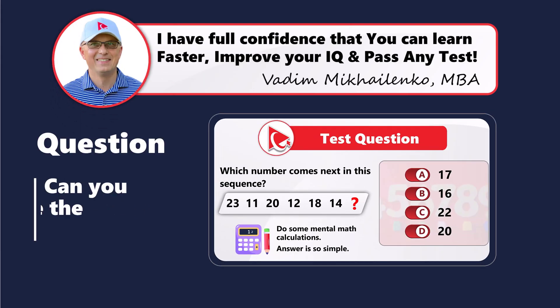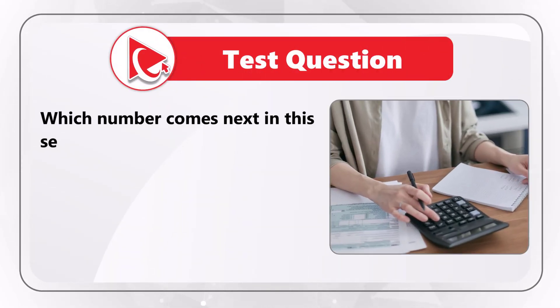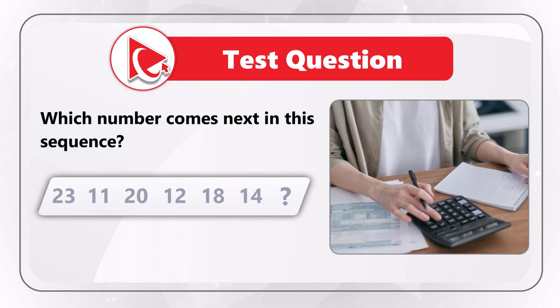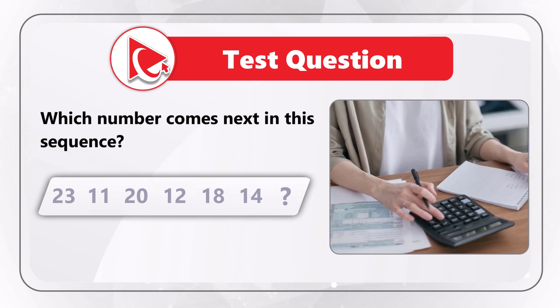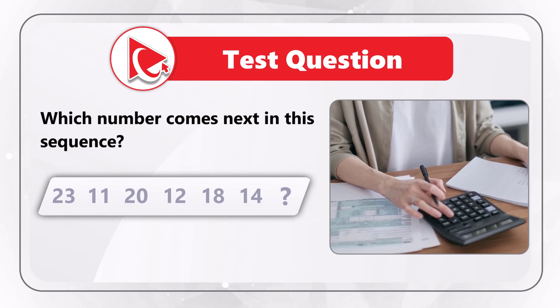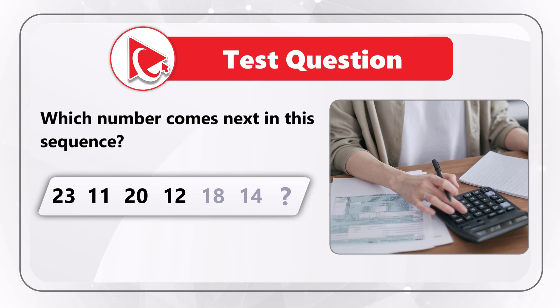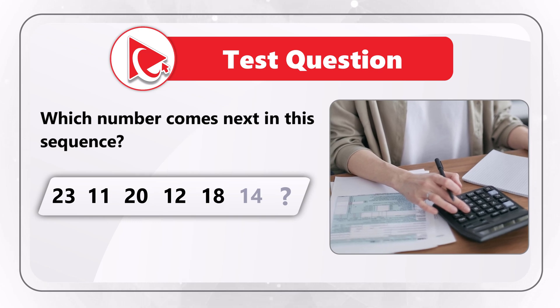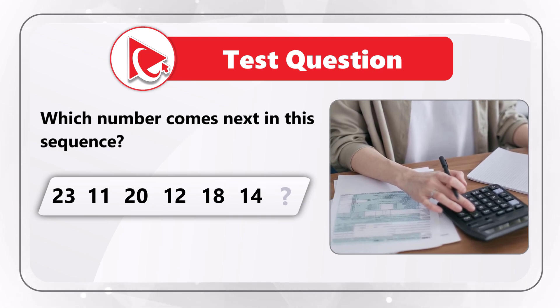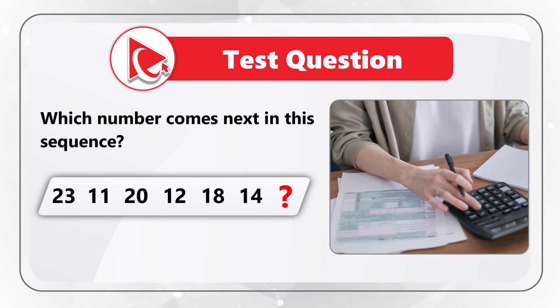What's interesting about this next question is that it truly tests your analytical skills. You need to determine which number comes next in the sequence. You are presented with a sequence of 6 numbers where the 7th is missing. The sequence is 23, 11, 20, 12, 18, 14 — and then comes the missing number, which you need to select out of 4 possible choices.